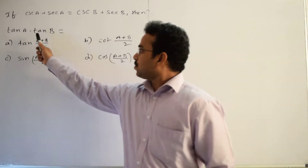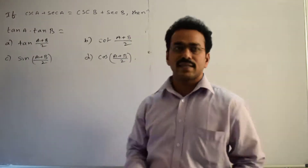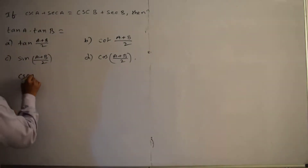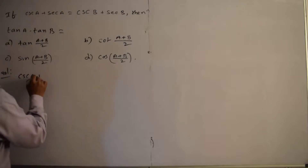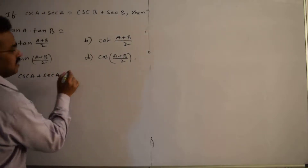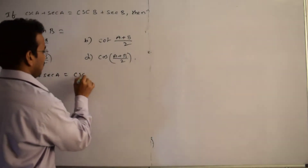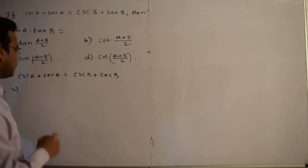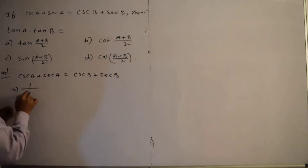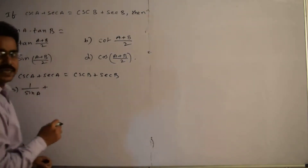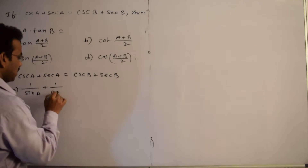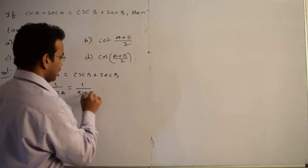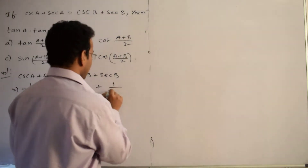Our task is to calculate the value of tan A into tan B. First, let's write the given information. Cosecant A plus secant A equals cosecant B plus secant B. We write this in terms of sines and cosines: 1/sin A plus 1/cos A equals 1/sin B plus 1/cos B.